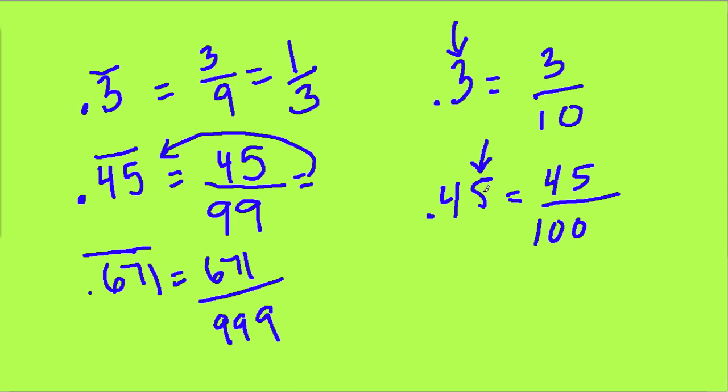This is the hundredth place, so you use the last digit to determine what goes down here in the denominator. You could also think about - there are two digits, so I choose a power of 10, 100 with two zeros. If I had 0.671, this would be 671 over 1,000.